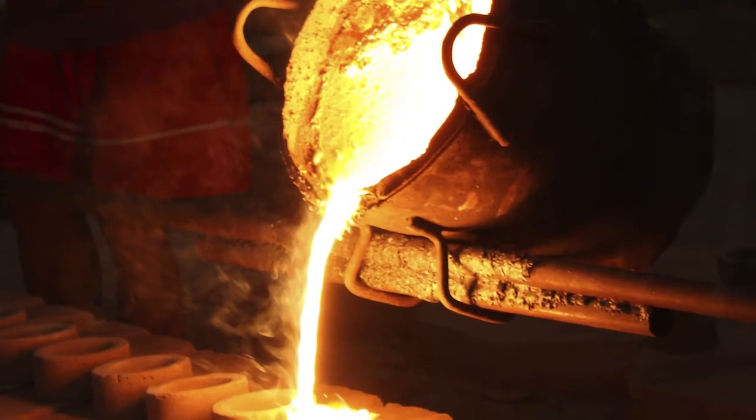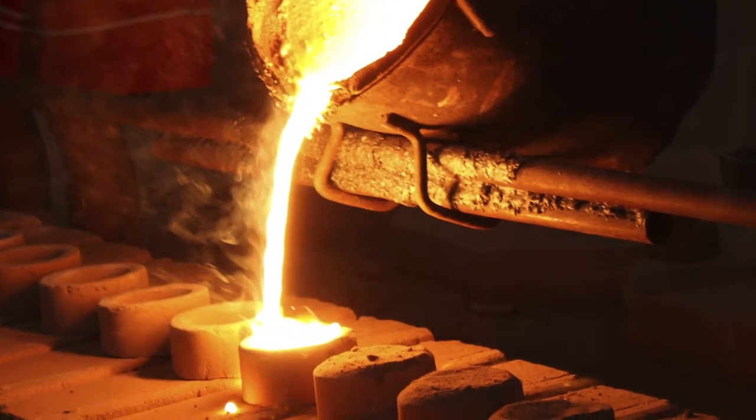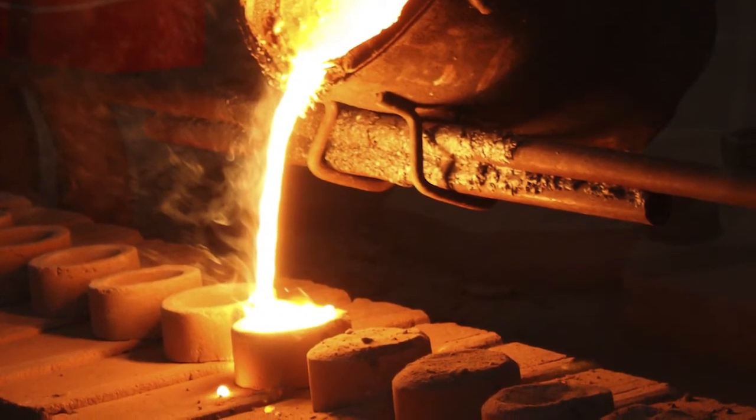A function processes numbers like a smelter processes ore. A smelter acts as a function, and when given an input, ore will produce an output, metal. Likewise, in math, a function is a mathematical machine that processes an input value into an output value.